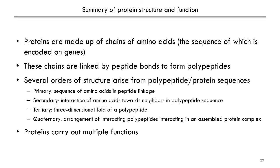As a summary: proteins are made up of chains of amino acids whose sequences are encoded in genes on DNA. These chains are linked by peptide bonds to form polypeptides. Secondary structure is local 3D structure resulting from nearby amino acid residues hydrogen bonding to their neighbors. Tertiary structure is the complete 3D fold of one entire polypeptide, and quaternary structure is the arrangement of interacting polypeptides in an assembled protein complex. In the next lecture, we will discuss the process of protein synthesis, that is, translation.